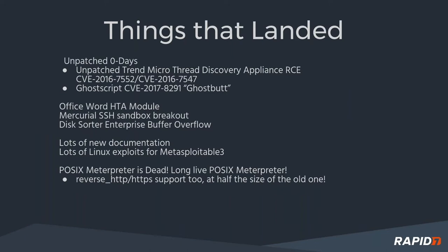A lot of new documentation and Linux exploits for Metasploitable 3 landed this week too. Definitely check out our presentation at Austin B-Sides, where we'll be talking about a lot of new Linux exploits that went into Metasploitable 3 and how they work. Also, this news has been long in coming, but it finally happened — Positive Interpreter is dead. We replaced it with what we used to call Metal, which within Metasploit framework is now actually called Meterpreter. It's half the size of the old one yet supports many more features, including reverse HTTP and HTTPS support. That's actually where our 500 payload count came from.